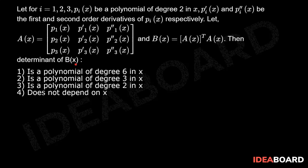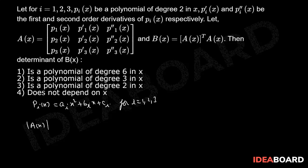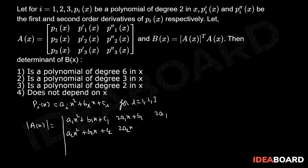Then find the determinant of B(x). Let p_i(x) = a_i·x² + b_i·x + c_i for i = 1, 2, 3. Now det(A(x)) equals the determinant of: [a1·x² + b1·x + c1, 2a1·x + b1, 2a1; a2·x² + b2·x + c2, 2a2·x + b2, 2a2; a3·x² + b3·x + c3, 2a3·x + b3, 2a3].